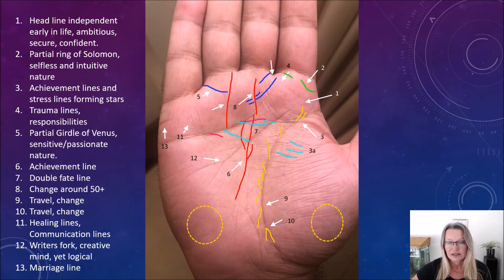Firstly, number one. The headline over here is independent from the lifeline, which is here. And it originates from the Mount of Jupiter, which is the padded area under the index finger. And that depicts the character, mainly the character of an ambitious, secure, confident personality who's independent, especially independent at an early age in their lives. And it is definitely a very ambitious mark.